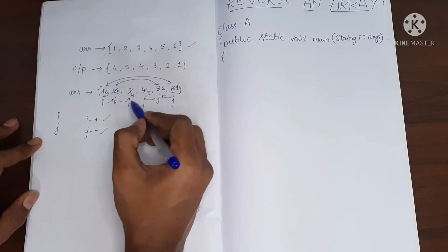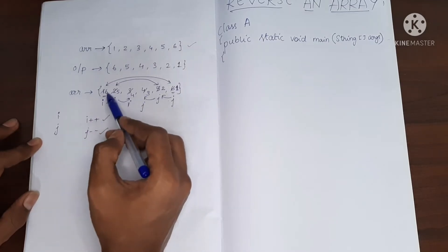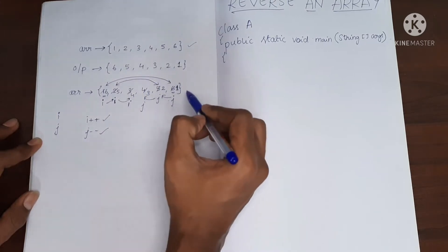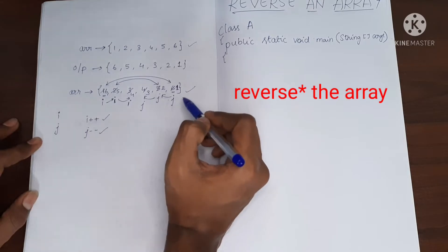And then if you see we have got our required output, we have six, five, four, three, two, and one. So in this way we can reverse the array.